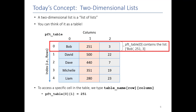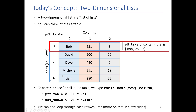The same thing works in this table — it's always row then column. At row zero column one is 251 in this example, and row four column zero is Liam's name. We can also loop through each of these, and I'll show you how to do that in a few moments.